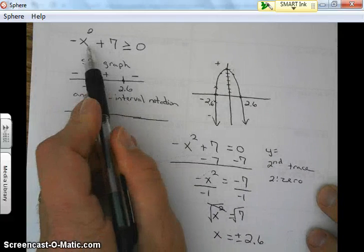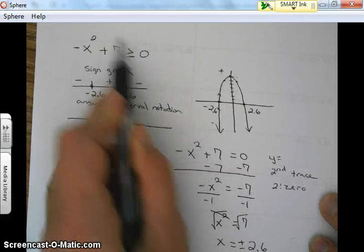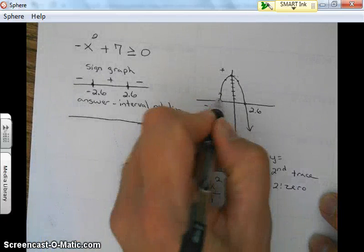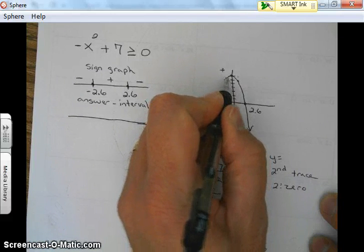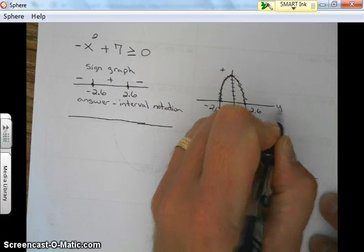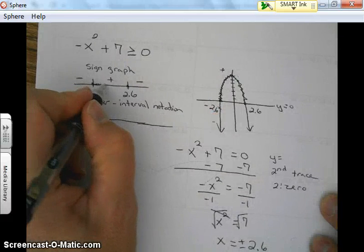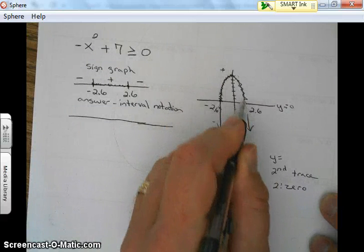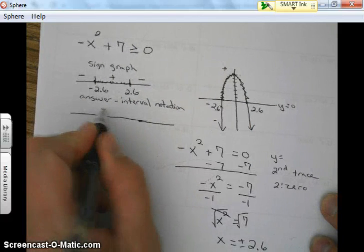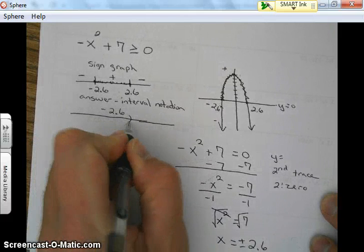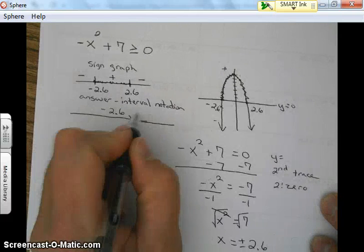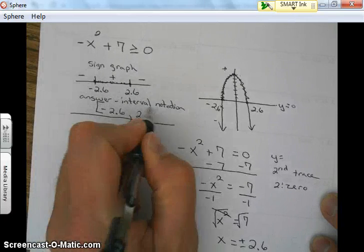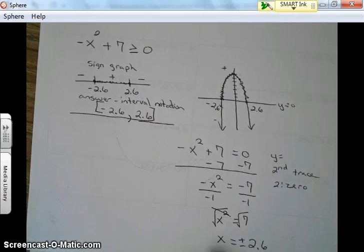Now the solution is going to be all values that are greater than or equal to zero. So we're talking about above the line y equals zero, above this line. So we're shading between these two points. So we only have one interval. It starts at negative 2.6 and it ends at 2.6. And since we have an equal sign and a closed dot, we use a bracket. And there is your answer.